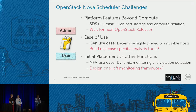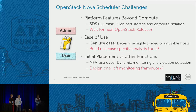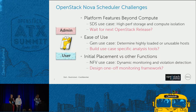The last interesting part is that all the work has been focused on initial placement. But what about the other functions? From NFV use cases, there is a very strong need for dynamic monitoring and violation detection, particularly around workload consolidation. The way things are right now, you have to design a one-off monitoring framework which is not closely tied to placement — you end up recreating the entire effort you put towards placement.